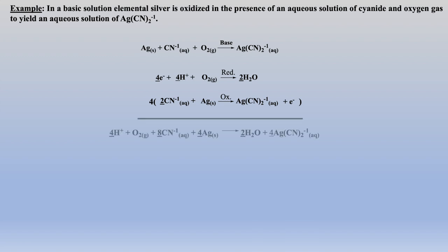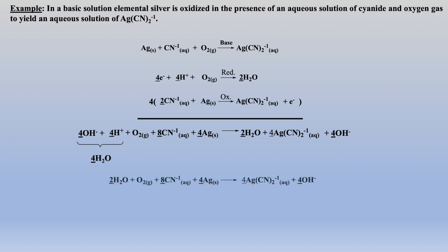We can add the 2 half-reactions together and simplify if necessary. Up to this point, all the steps were the same as in acid. But since we are in base, we need to add hydroxyl groups to neutralize the protons. In this example, there are 4 protons on the reactants side, so I will add 4 hydroxyl groups to the reactants side. Remember, if I add 4 to the reactants side, I also add 4 to the product side. This forms 4 water molecules on the reactants side, and further simplification may be necessary. At the end, we check that all atoms and charges are balanced in the final equation.